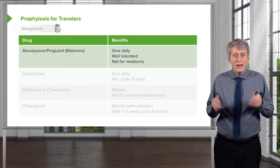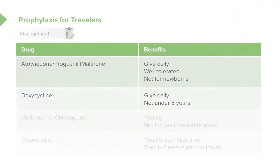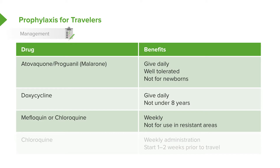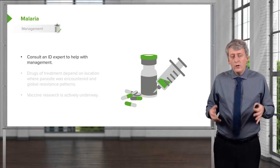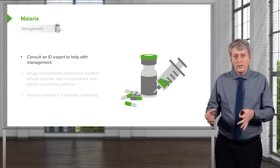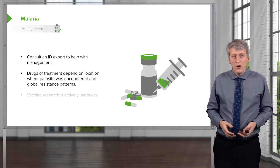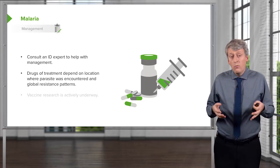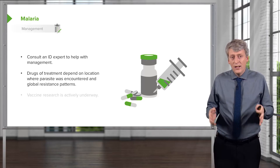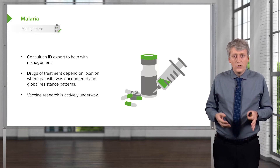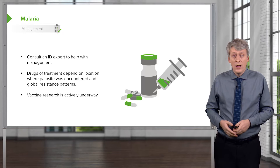The first prophylaxis option is malarone, given daily — it's very well tolerated, but we can't give it to newborns. Another daily prophylaxis option is doxycycline, which we don't recommend for children under 8, as it can cause lines in the bones and teeth. Mefloquine and chloroquine are convenient because they're used weekly, but they're not for use in resistant areas; chloroquine requires starting one to two weeks prior to traveling. When we see a patient with malaria, we usually call an infectious disease consult. The drugs of treatment depend on where the parasite was encountered and global resistance patterns. The most important thing is that this killer is potentially going to be curbed in the future through vaccine use — there is active vaccine research going on, and we're all keeping our fingers crossed.